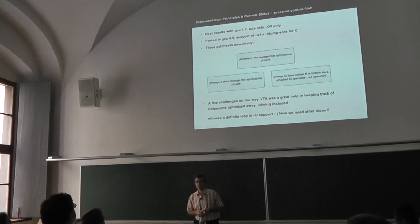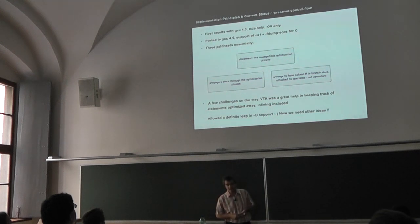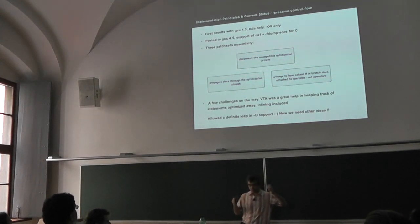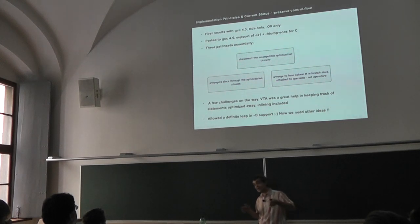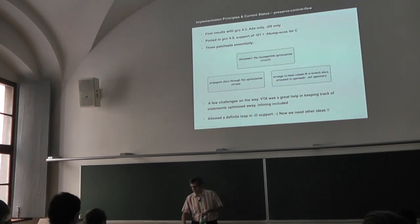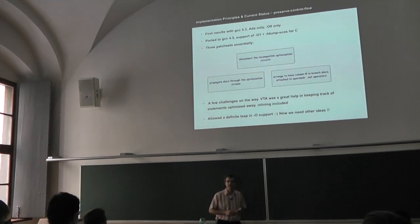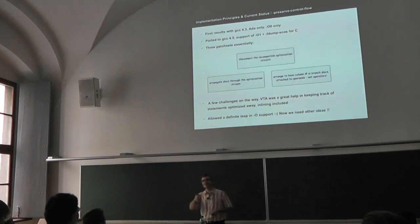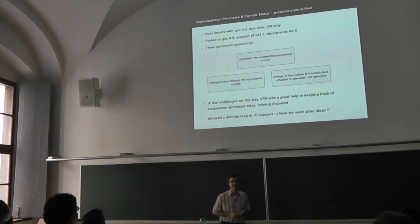We have first results with GCC 4.3, for Ada only and for -O0 only — no optimization at all. -fpreserve-control-flow at -O0 disconnects a few things that still happen even at -O0. We ported that to GCC 4.5 around a year or two ago, and there we added support for -O1, thanks to something I will be mentioning later. We also implemented -fdump-scors for C at that point. So there are basically three patch sets.